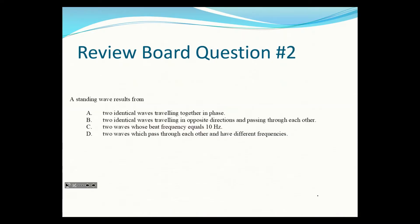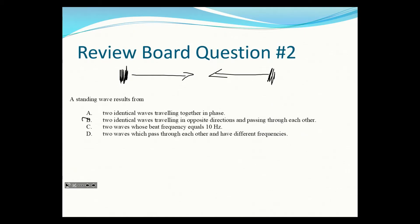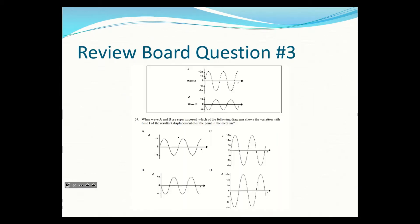A standing wave — that was the pool demonstration. To create a standing wave you need two identical waves with the same frequency, one from each side, sending the waves towards each other. Two identical waves traveling in opposite directions passing through each other would be the correct answer.